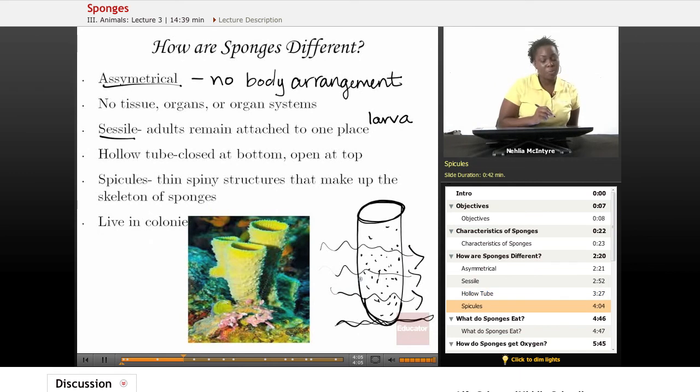Also, sponges have a structure called spicules. And these spicules are thin, spiny, pointy structures that make up the outside skeleton of the sponge. So these would be considered spicules.